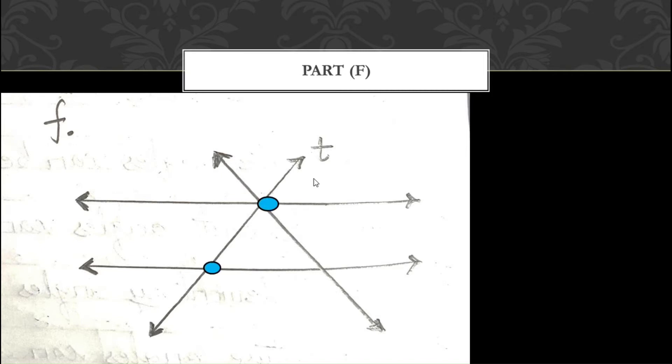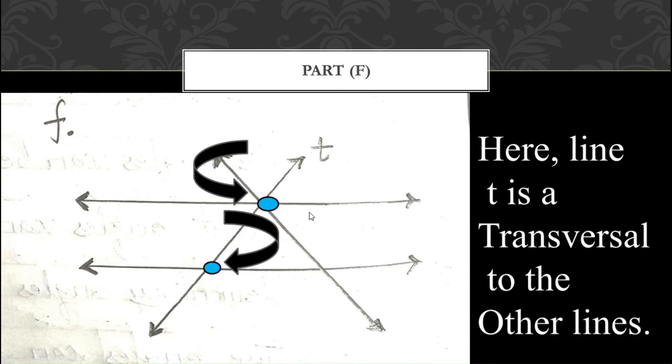Let us move on to part F, the last part of question number 1. You can see line T intersecting on two points. I told you that a transversal intersects the other lines on two or more than two points. It is intersecting on two points here, so yes, line T is a transversal to the other lines.